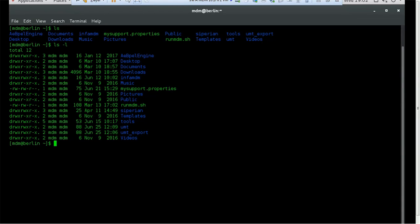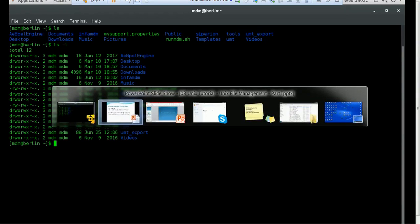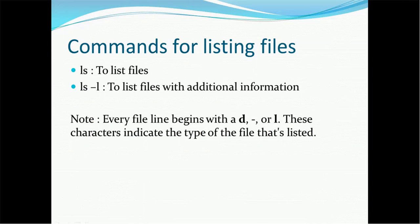the very first character is D. D stands for directory. If it is an ordinary file, there will be a hyphen. If it is D, then directory. If it is hyphen, then it is a file. So that is a very simple convention to identify directories and files. So that is what here it is mentioned. Every file line begins with a D, hyphen, or L. This character indicates the type of file that's listed.